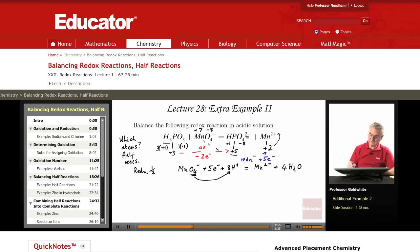1 manganese, 1 manganese. 4 oxygens, 4 oxygens. 8 hydrogens, 8 hydrogens. Charge on the left: negative 6, positive 8, positive 2. Charge on the right: positive 2.